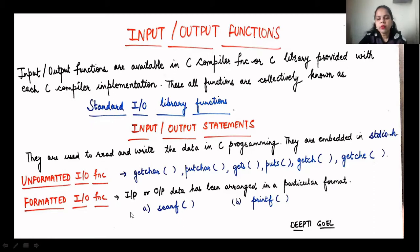Formatted means that when you want your output to be specified in a certain particular format — when you want it printed in a proper format — then it is called the formatted input output function. The formatted input output functions are of two types: scanf and printf.